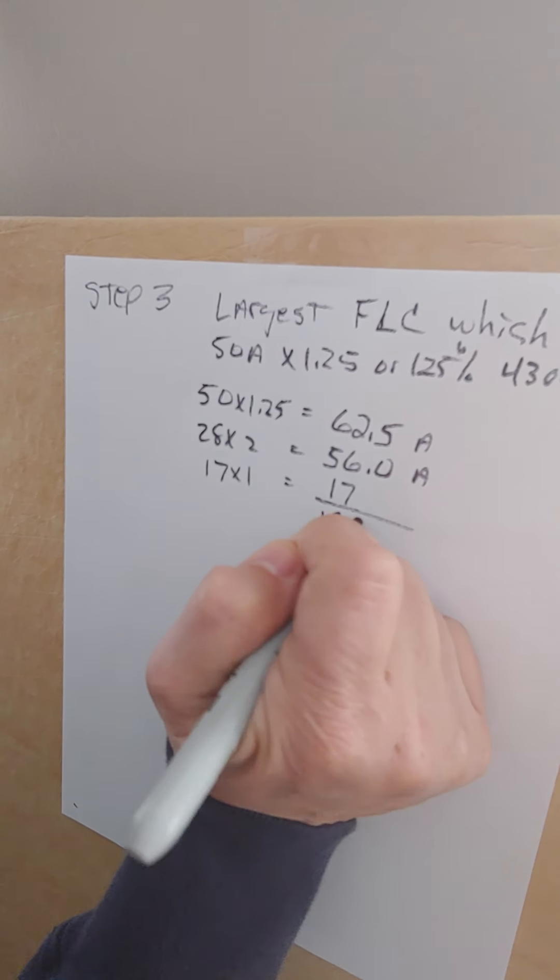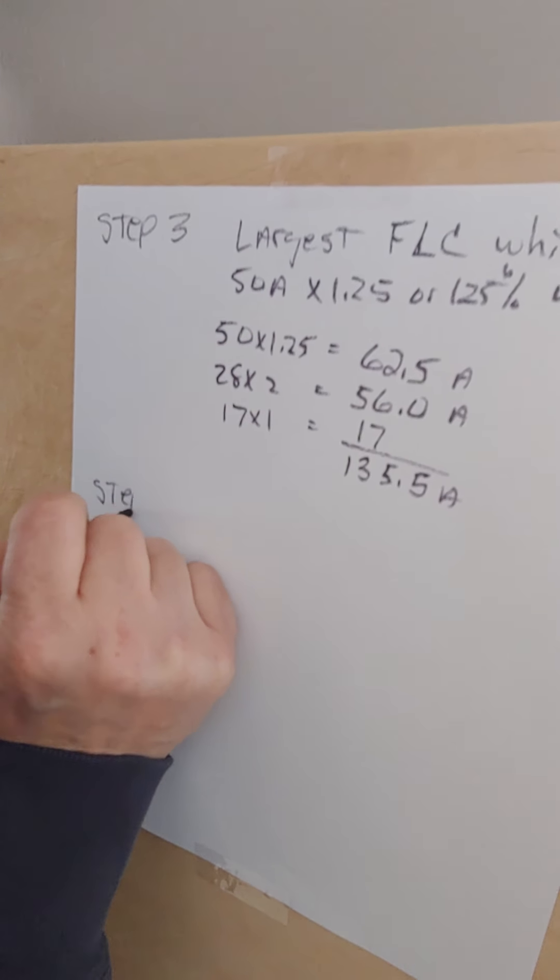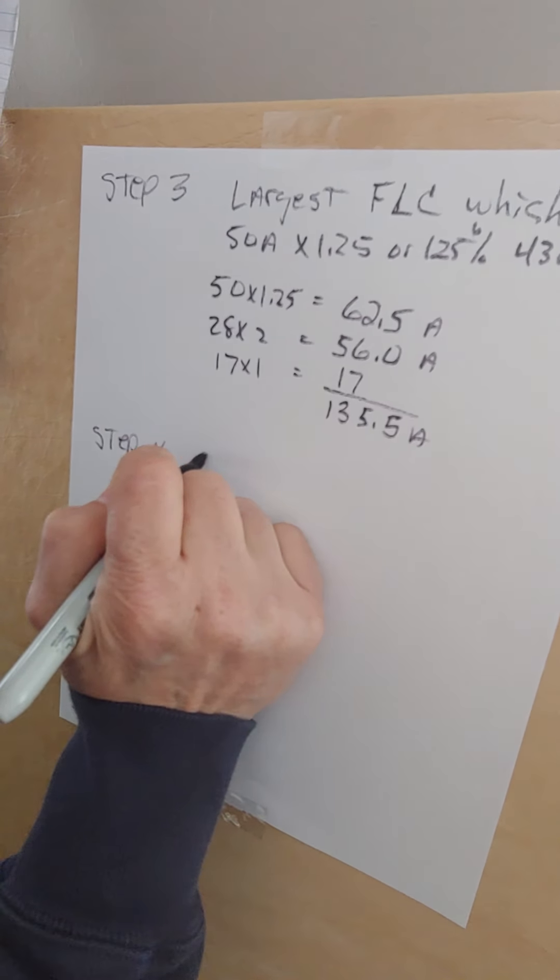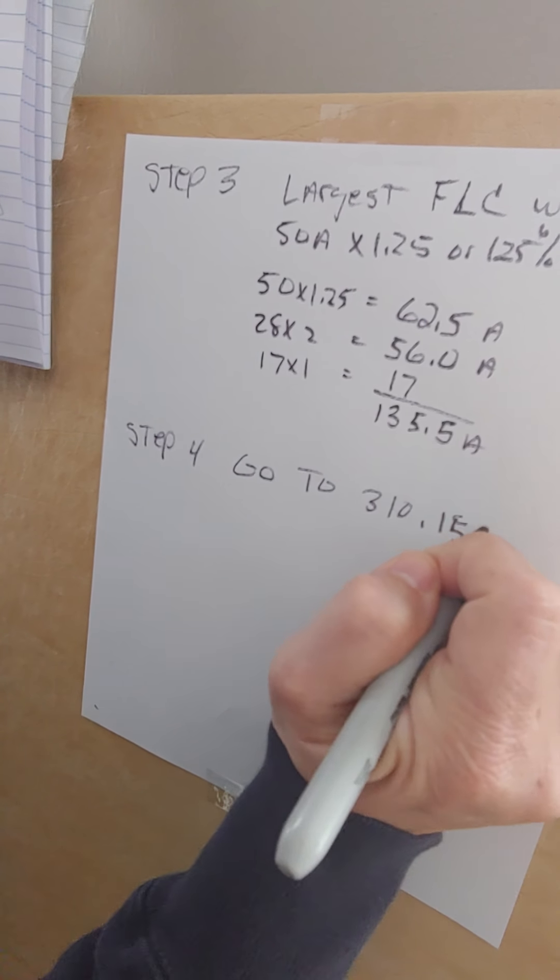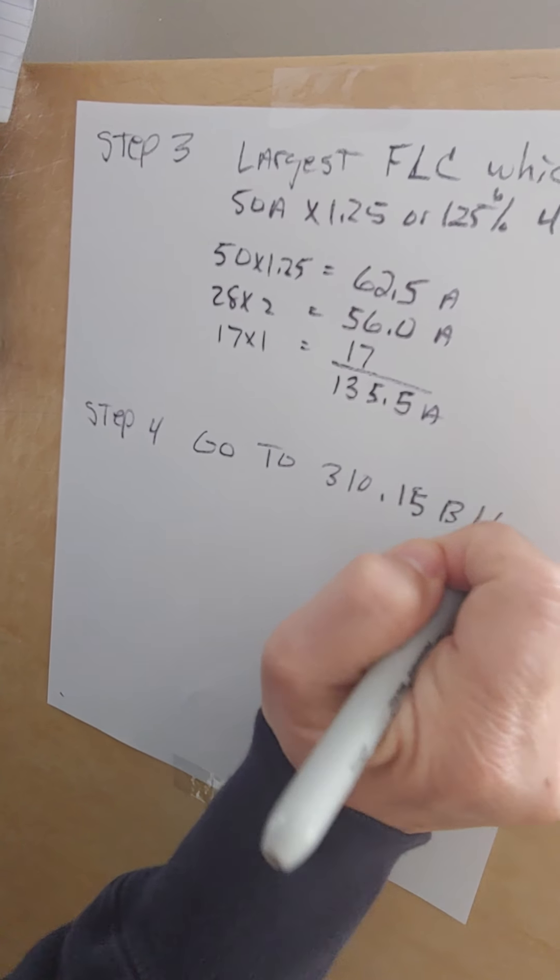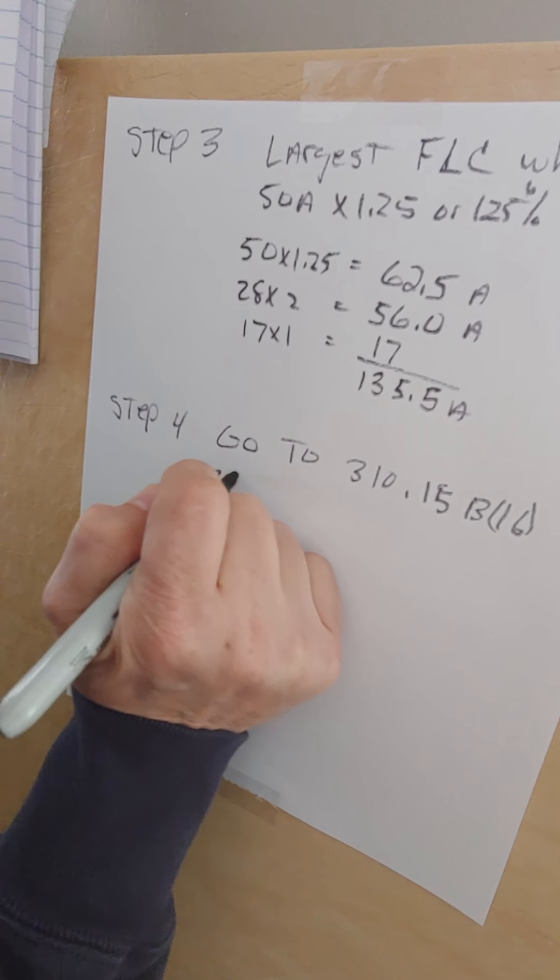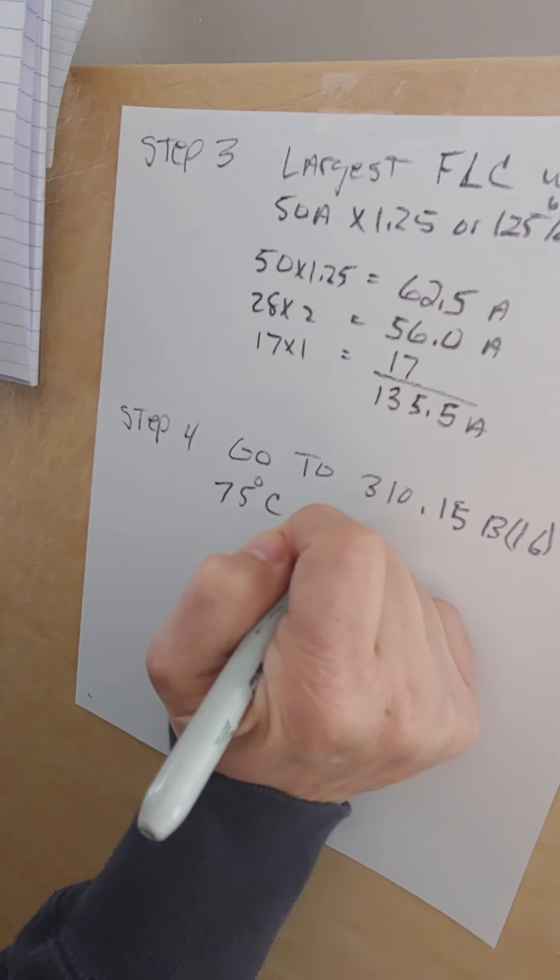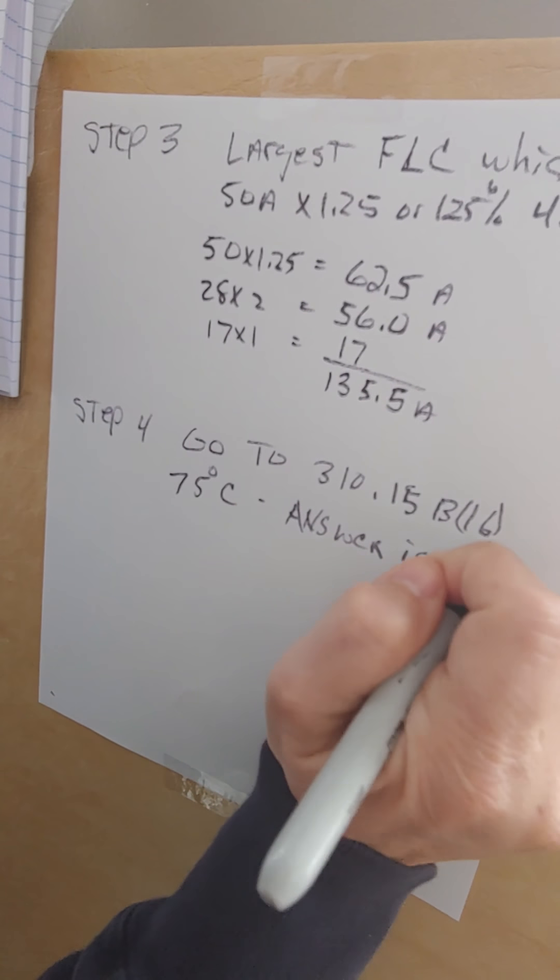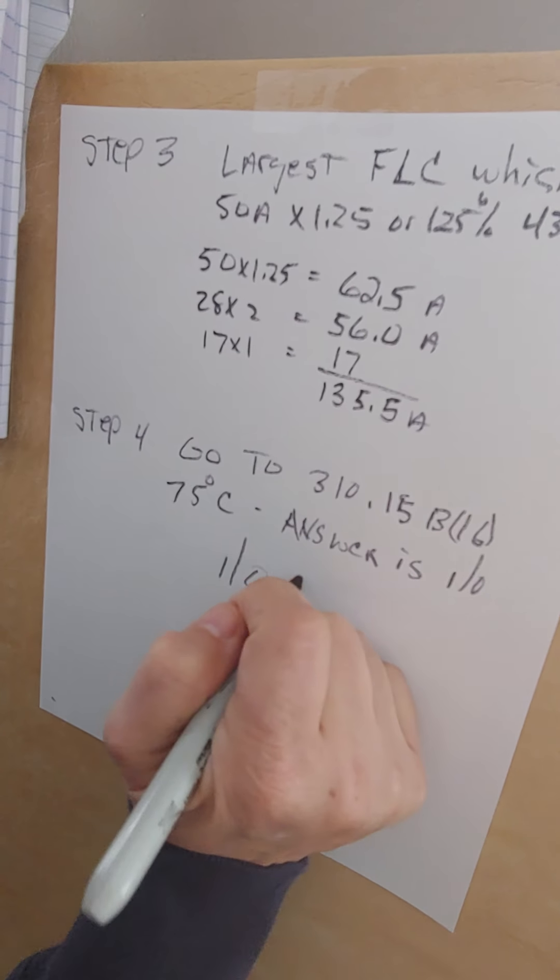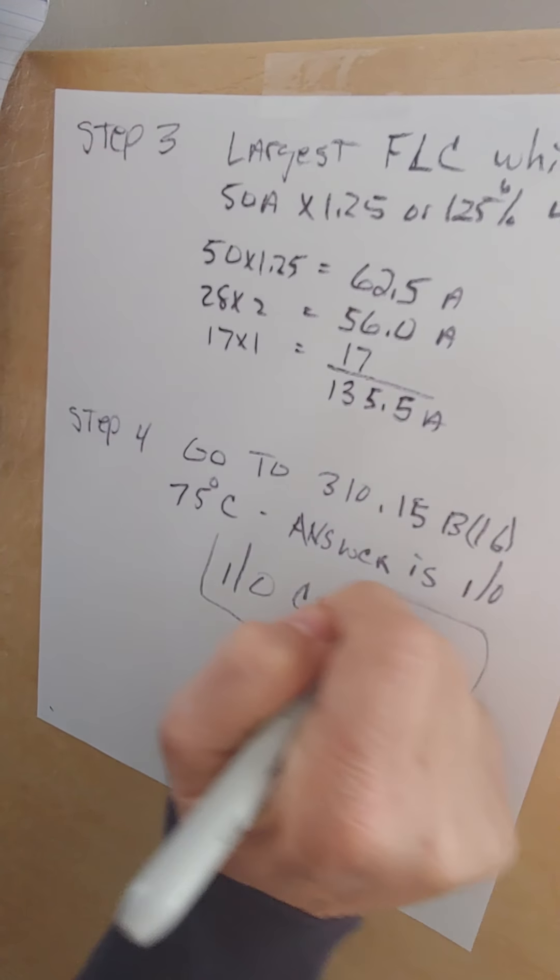The last step, step four, is go to 310.15 B16. We go to the 75-degree column, and your answer is a 1-0 conductor or feeder.